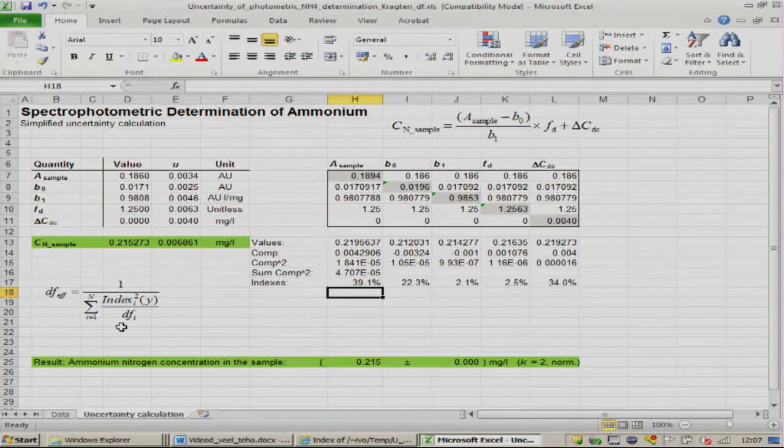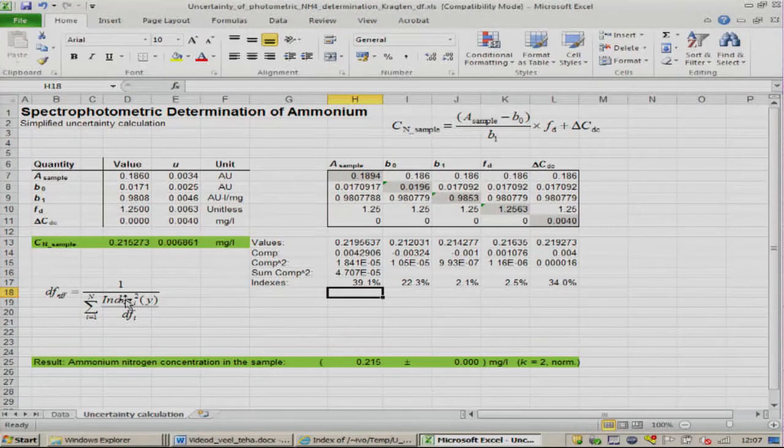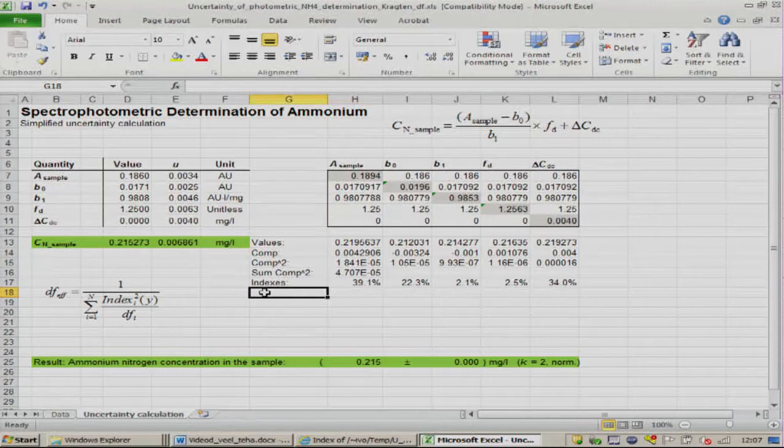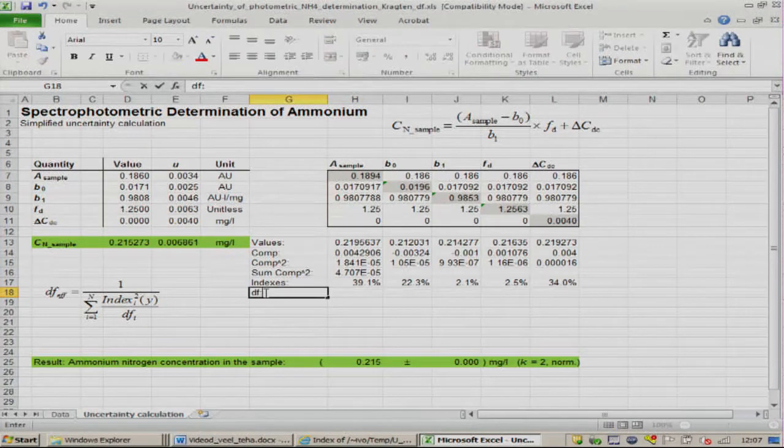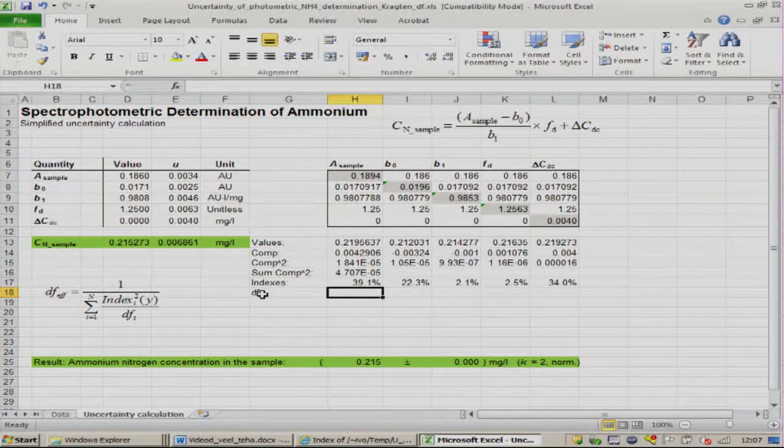I have put here the Welch-Satterthwaite equation, and the indexes of the input quantities that we need here we already have. Now we need to calculate the numbers of degrees of freedom for all of these input quantities. Let us now look quantity by quantity.